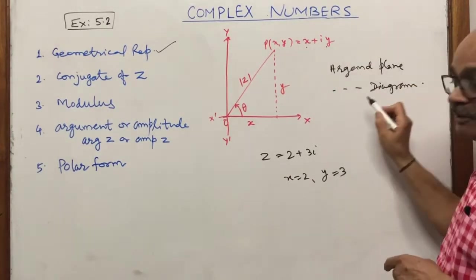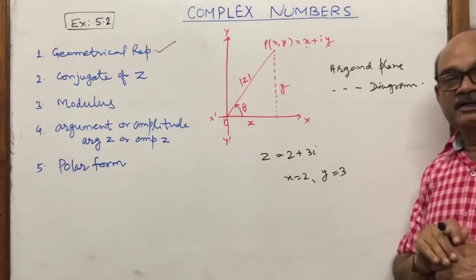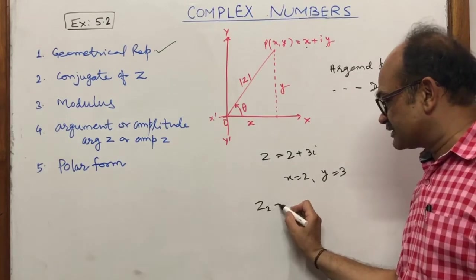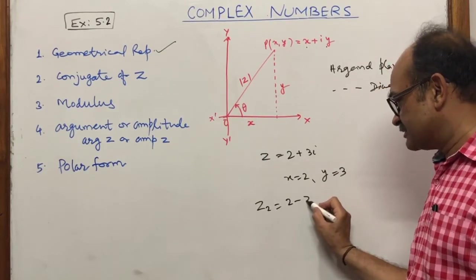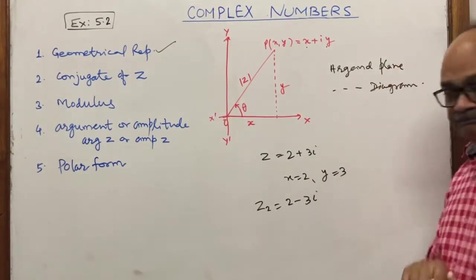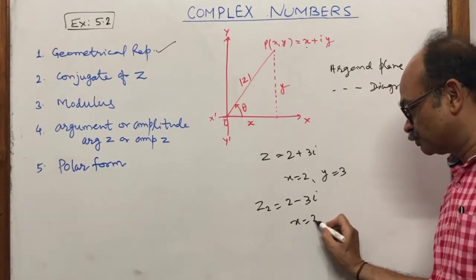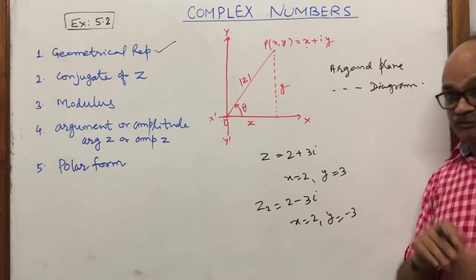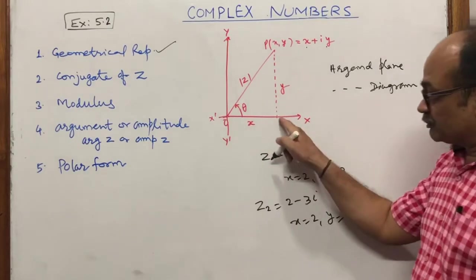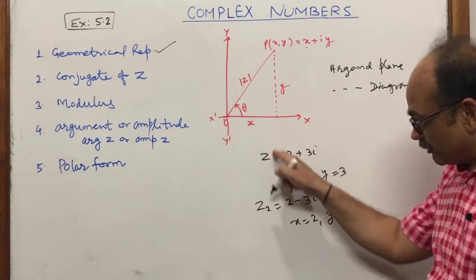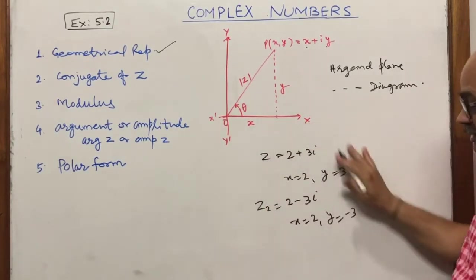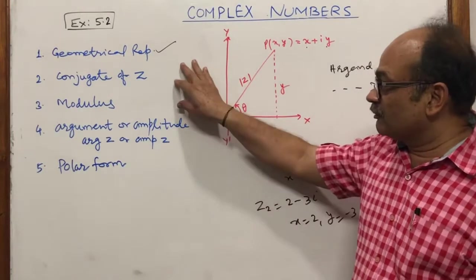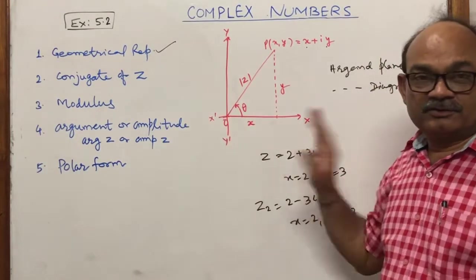For the second complex number 2 minus 3 iota, x equals 2 and y equals minus 3, so we plot (2, −3). In this same way we can plot complex numbers in all four quadrants.